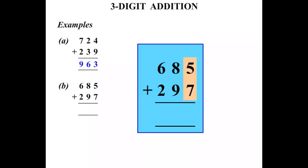So 5 plus 7 is 12. Write the 2 down and carry the 1. Our next column. Starting from the top. 1 plus 8 is 9. Plus another 9 is 18. So we write our 8 down and carry the 1.